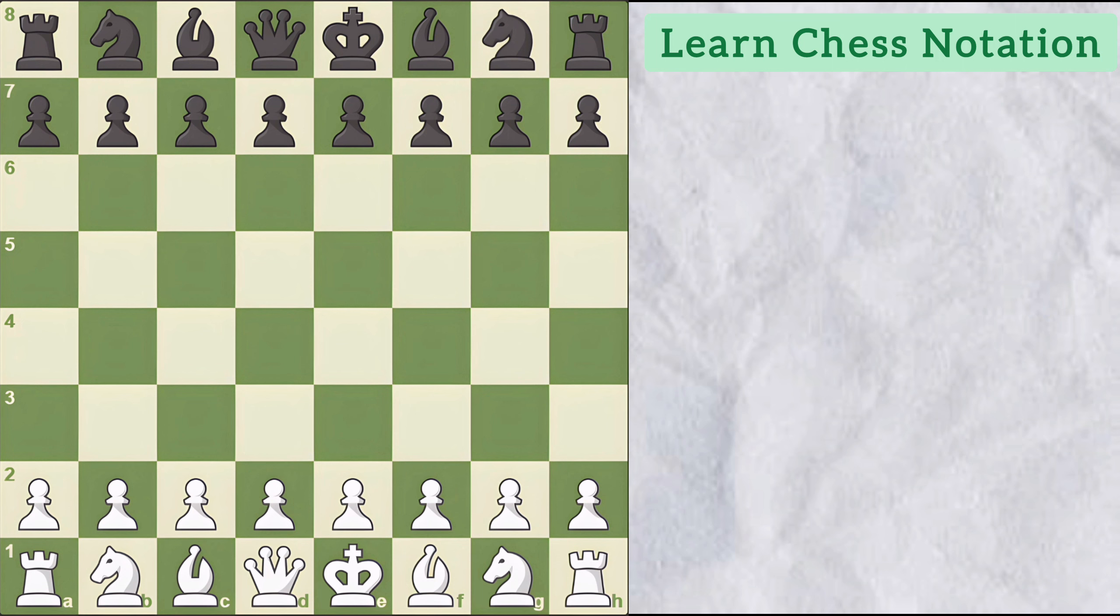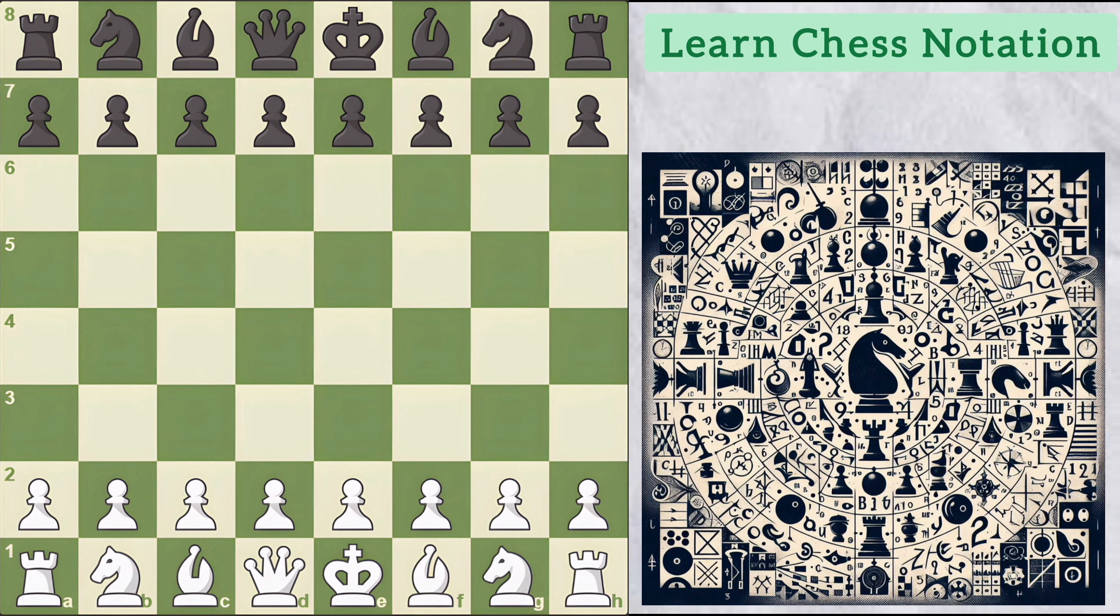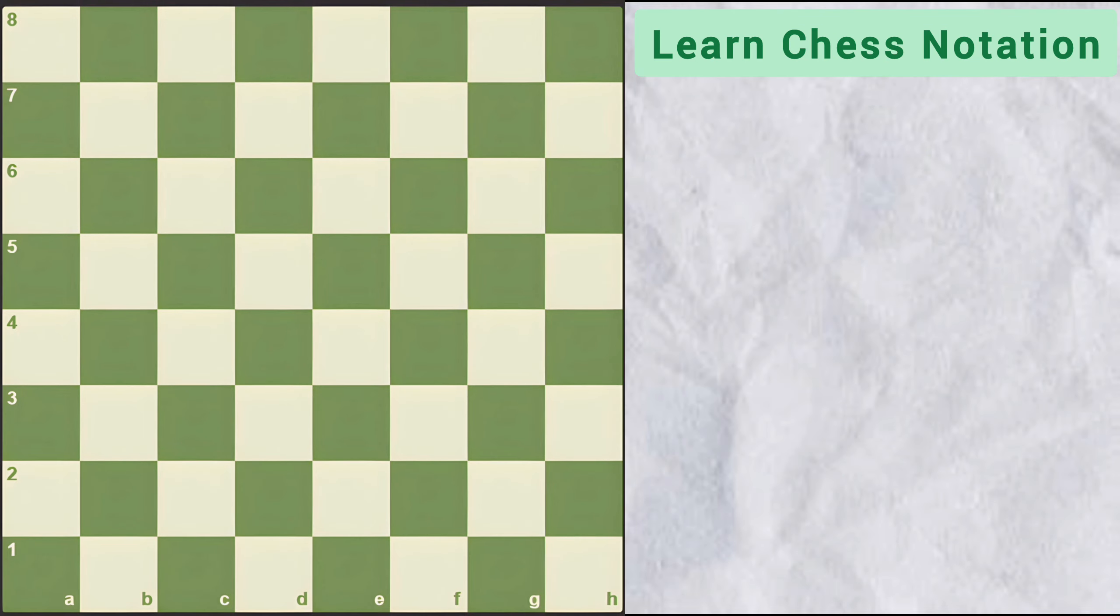It's a bit like the secret code of chess and once you crack it, you will feel like a chess maestro. Before we jump into Notation, let's quickly review the chess board. We all know that there are total of 64 squares on the board and every square has a unique address.